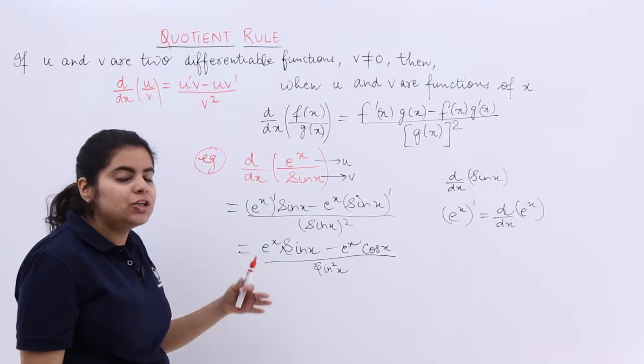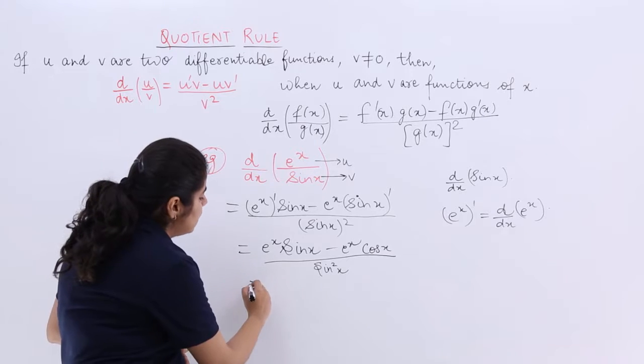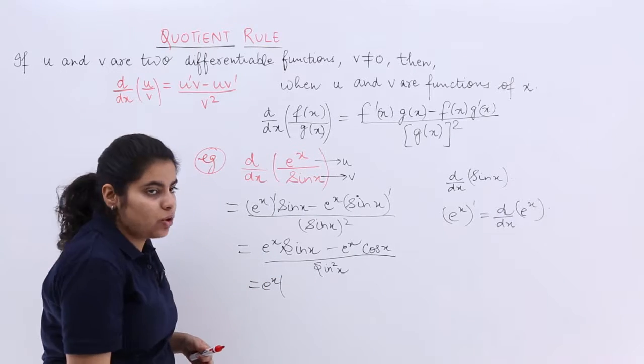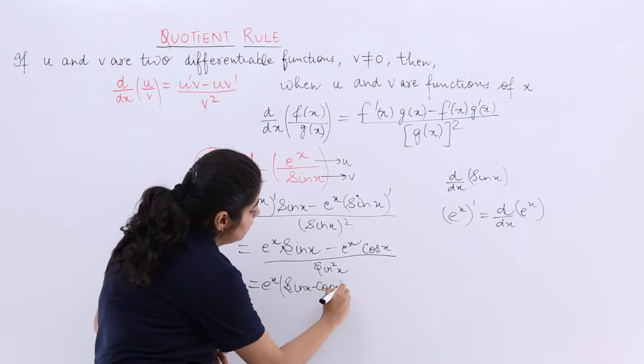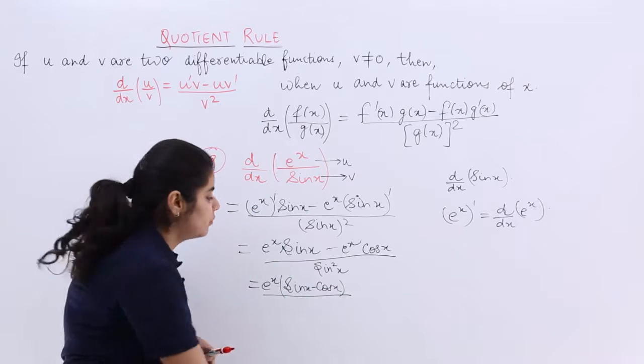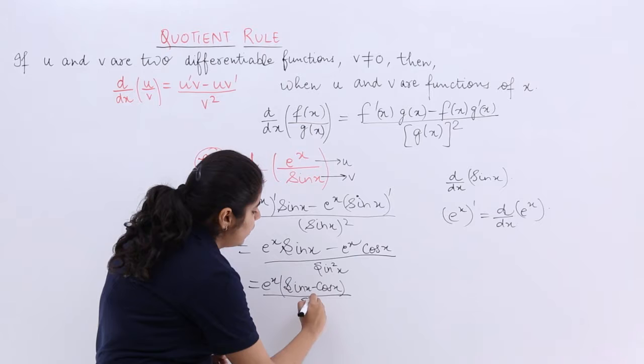Now, what you can do is just to simplify it. You can take things common. What comes out as common? e raised to the power x is common. Inside, you are left with sin x minus cos x, and whole division will give me sin square x.